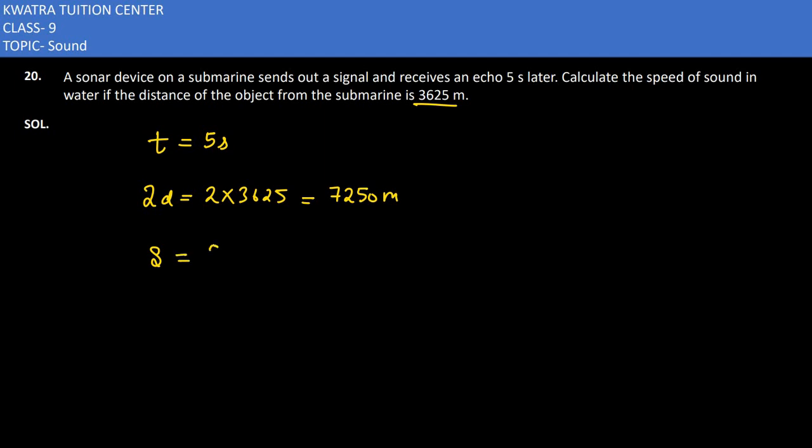Now we will find out speed. And what is our speed? 2D by T. How much is our 2D? 7250 divided by 5.